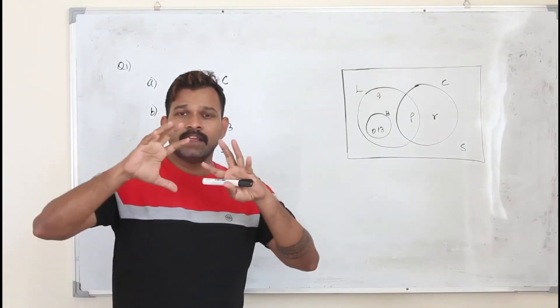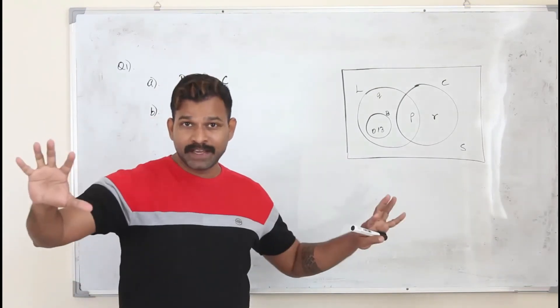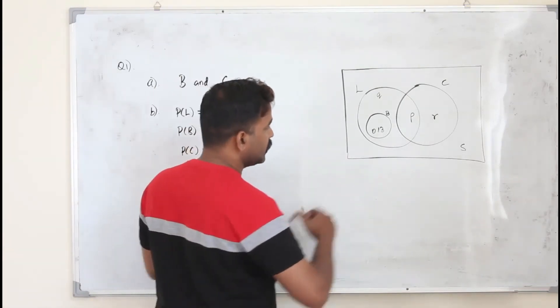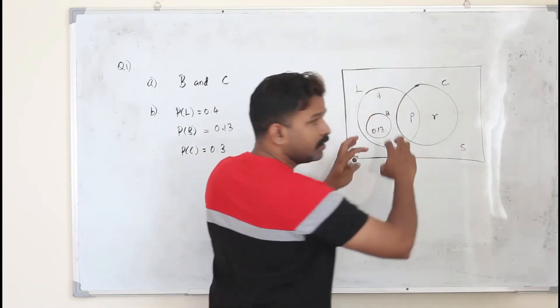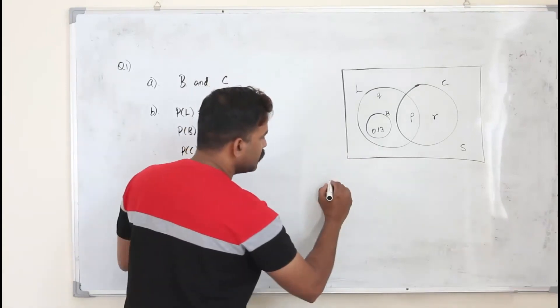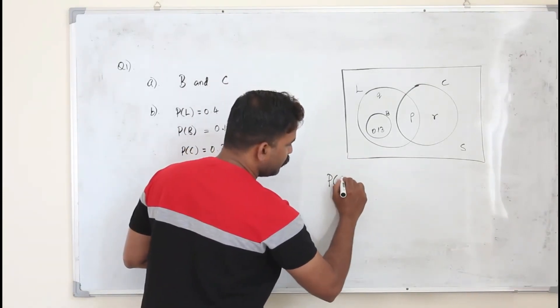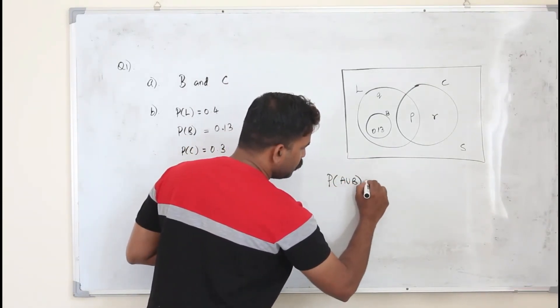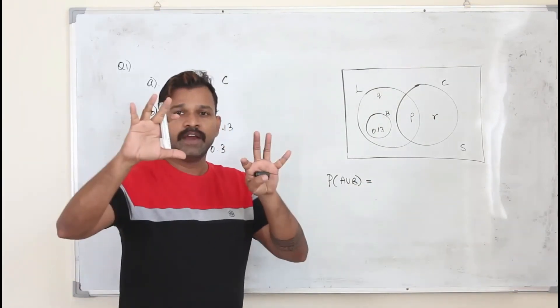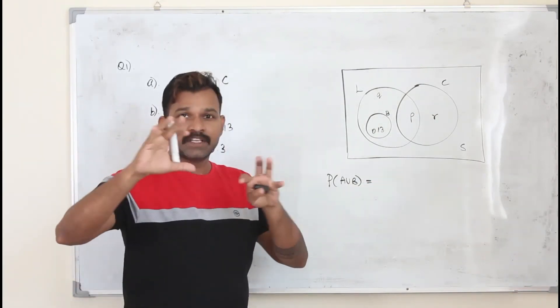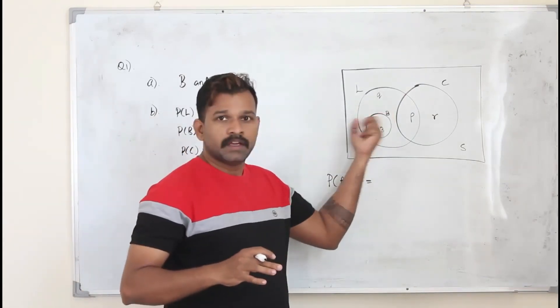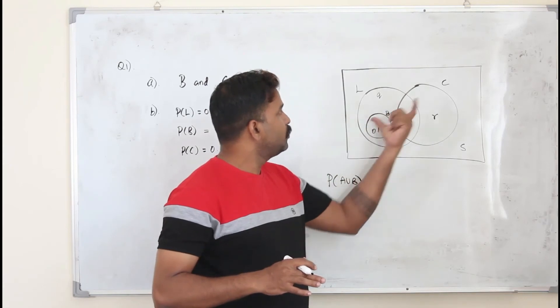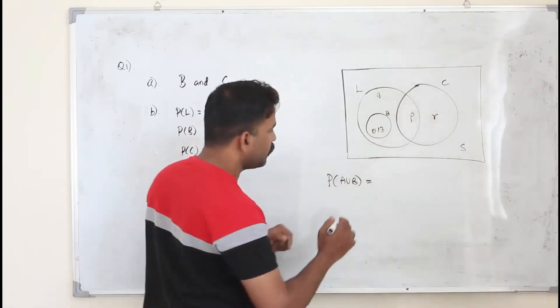The first one: if two events are mutually exclusive events, that means B and C. If you want to find the union of these two sets, let's say A and B are two mutually exclusive events. There is no intersection between these two sets. So you need to take this whole value plus this value. That's how you find the union.